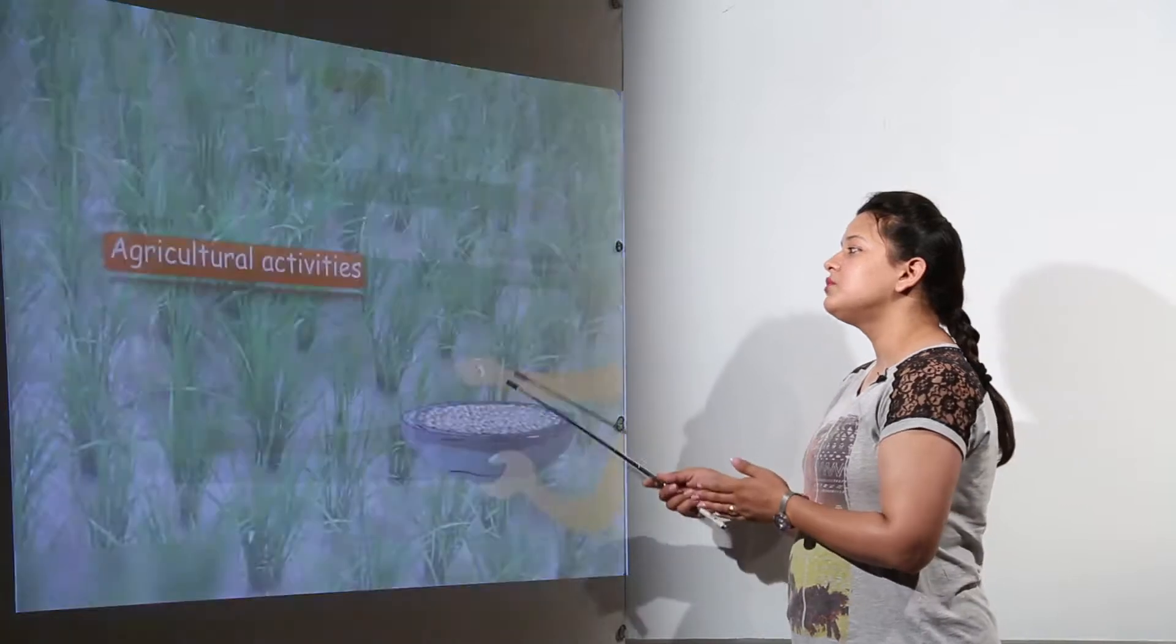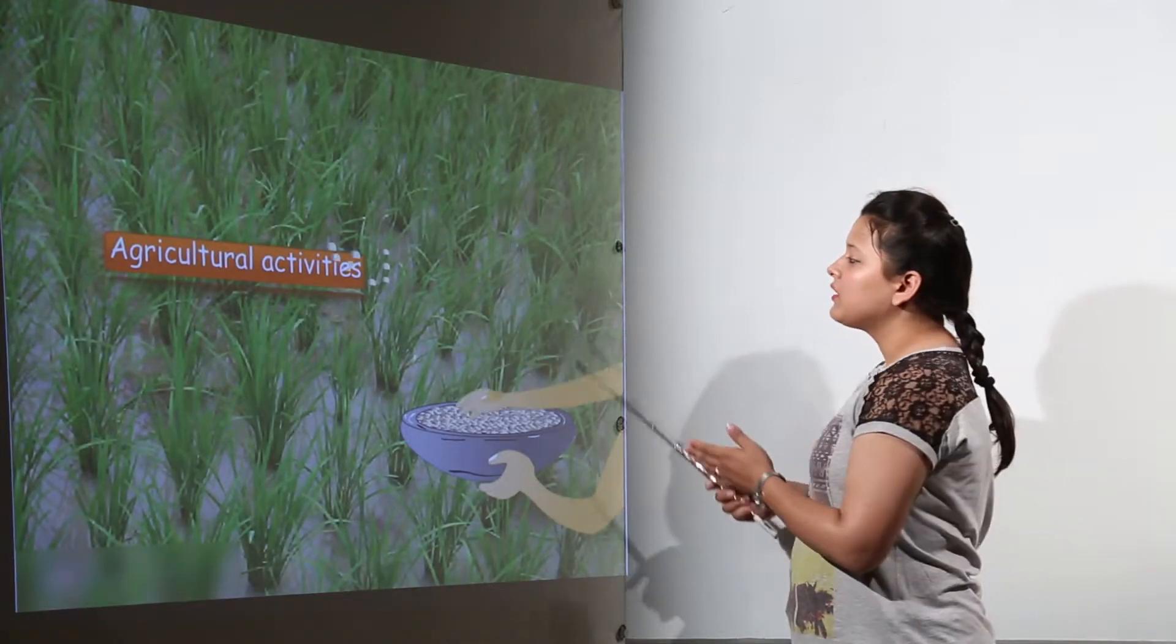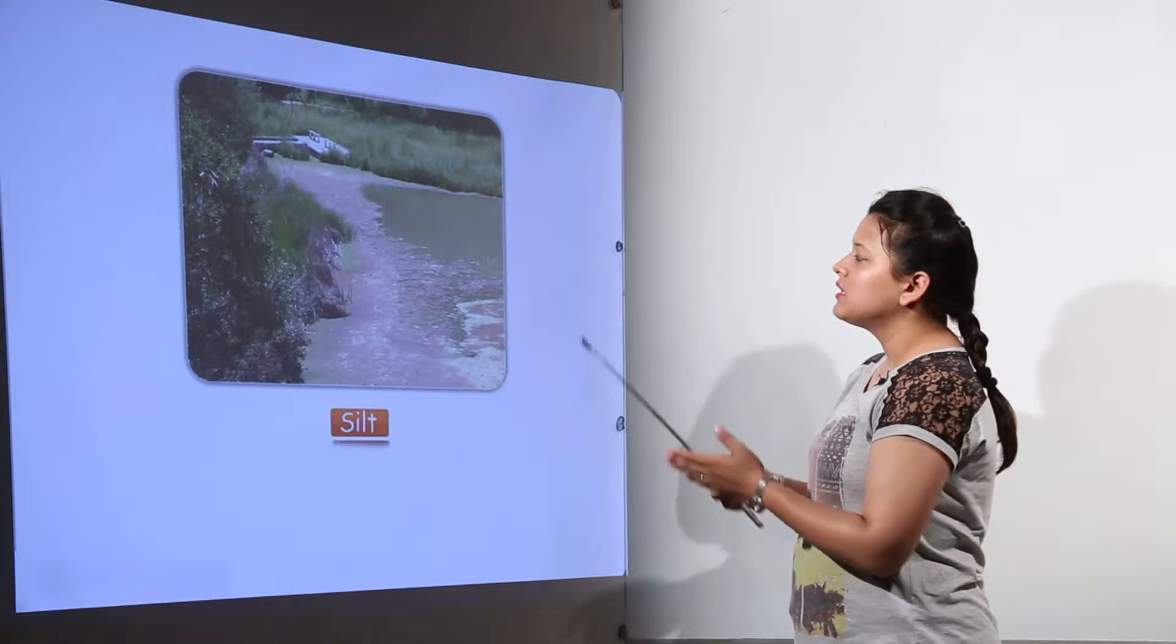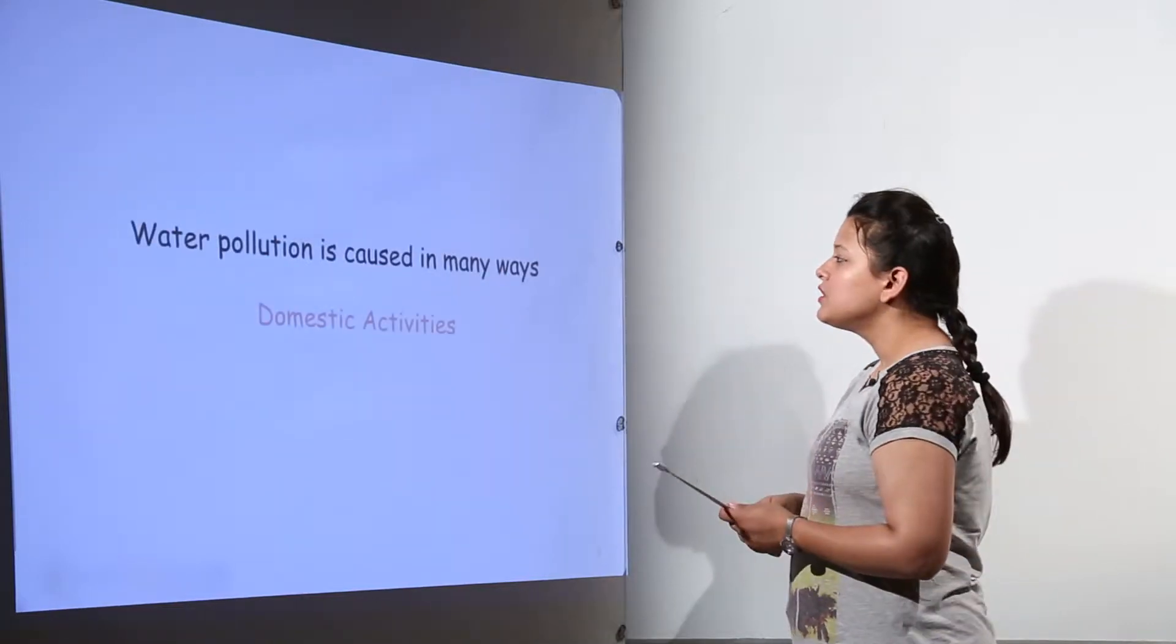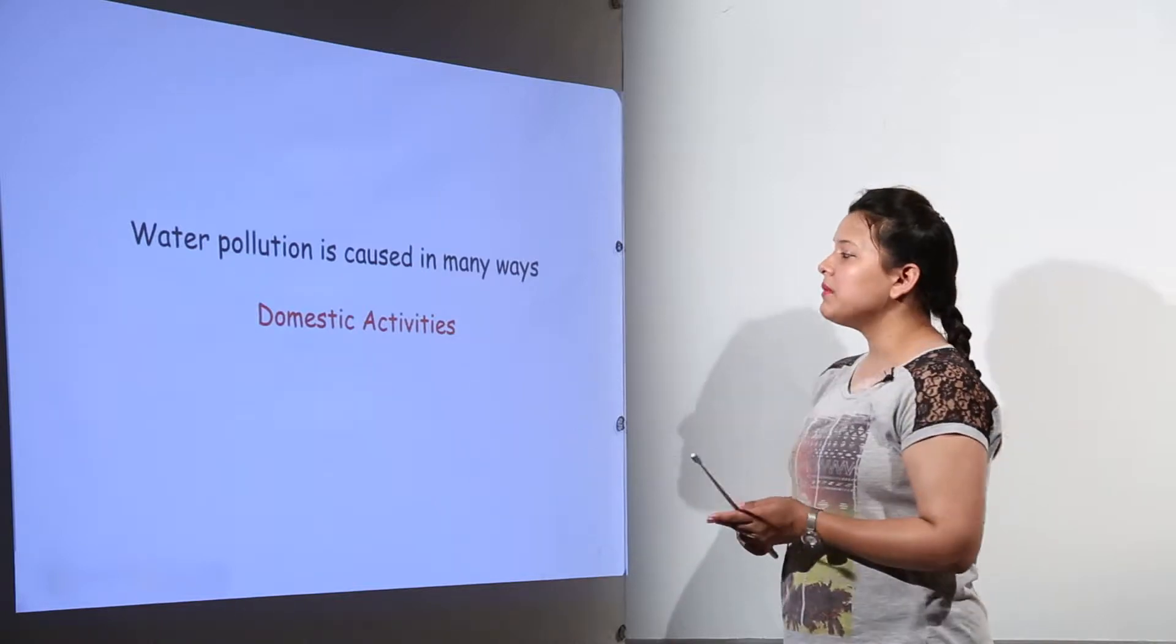That could be due to the sewage that we put into the water, the agricultural activities, the silts that are getting mixed into the water slowly. So water pollution is caused in many ways.